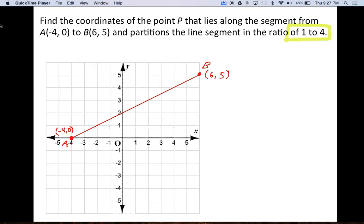So in this problem it says, find the point, so we're looking for a point along this line segment that partitions the segment in a ratio of 1 to 4.